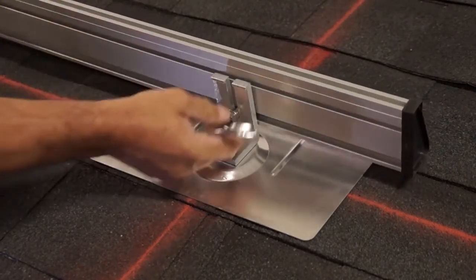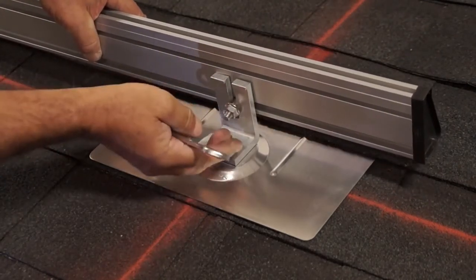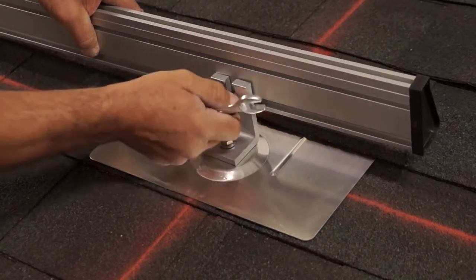Simply drop the rail into the open slot of the L-foot. Level and tighten the bolts. The installation is now complete.